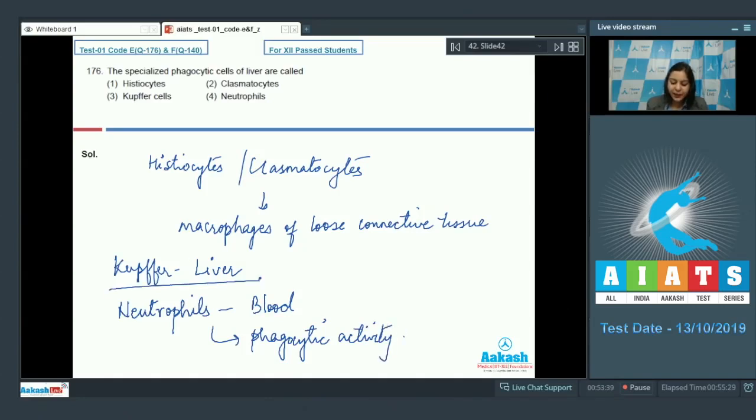Therefore, specific cells of liver are Kupffer cells. So our answer becomes option number 3. Let us see the next question students.